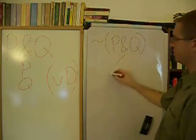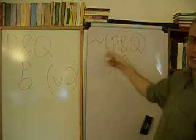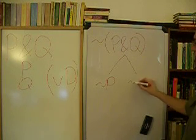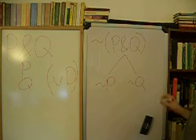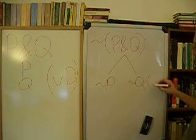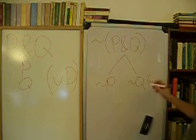then it turns into, not P and Q, turns into either not P or not Q. And that is, again, the negated conjunction. Oh, now this over here.